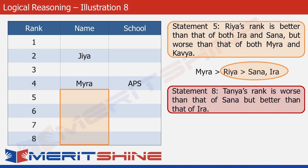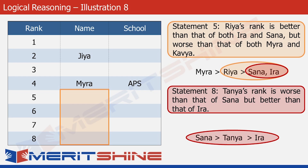Look at statement 8 now. It says Tanya's rank is worse than that of Sana but better than that of Ira. So Sana is above Tanya, and since Tanya is better than Ira, the order becomes: Sana, then Tanya, then Ira. Combining this with our earlier arrangement, Tanya fits between Sana and Ira. So the order Riya, Sana, Ira now becomes Riya, Sana, Tanya, and Ira — and these four are fitted into the highlighted cells in the table, ranks 5 through 8, in that order.